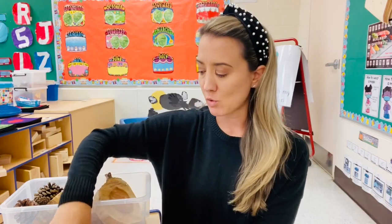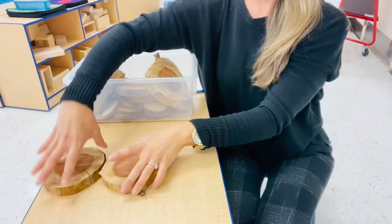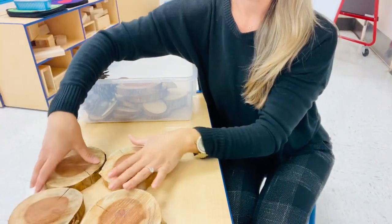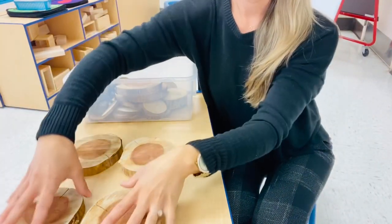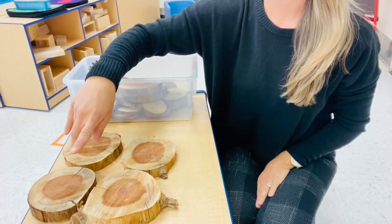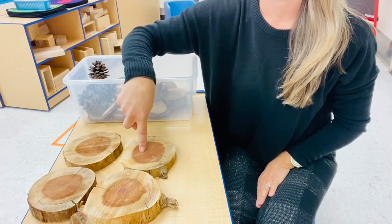Encourage your child to first start with a group of four. Have your child make a group of four. I will make a group of four with my tree cookies — I'm going to put two next to one another and then two on top. And then have your child count how many: one, two, three, four.